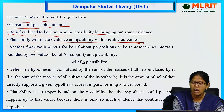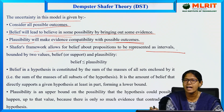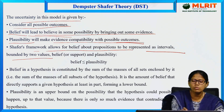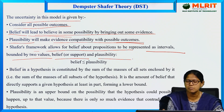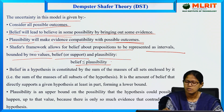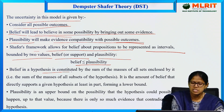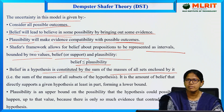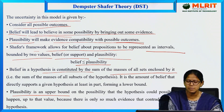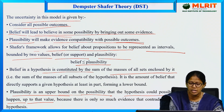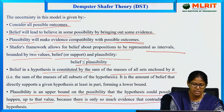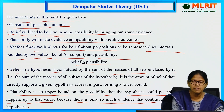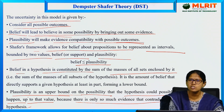Shafer's framework allows for belief about propositions to be represented as intervals bounded by two values: belief and plausibility. Here, belief is always less than or equal to plausibility. Belief in a hypothesis is constituted by the sum of all the masses of all sets enclosed by it. Plausibility is an upper bound on the possibility that the hypothesis could happen, and plausibility equals 1 minus the belief.